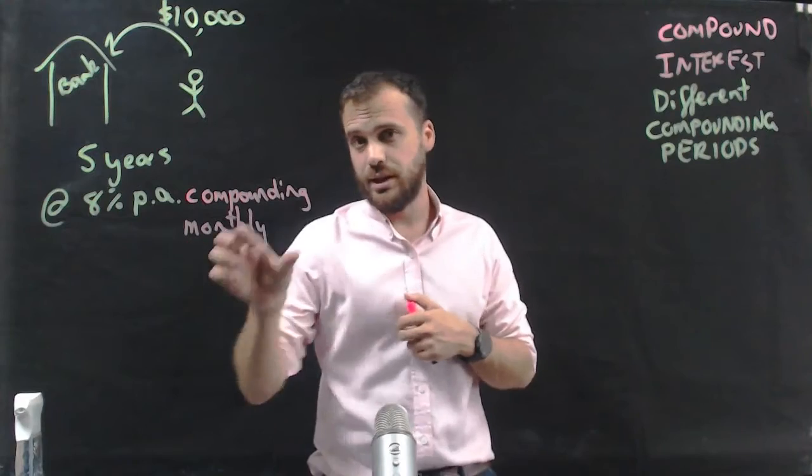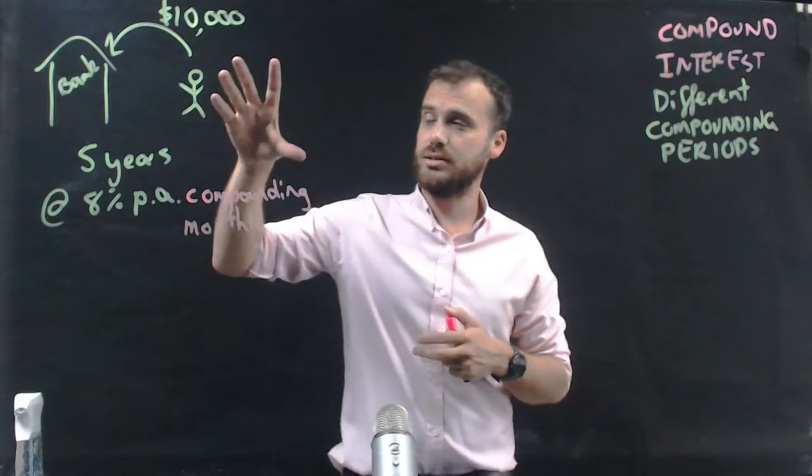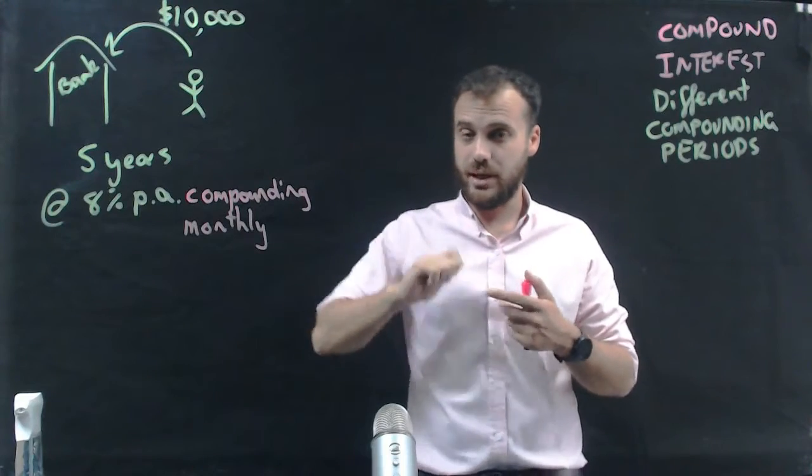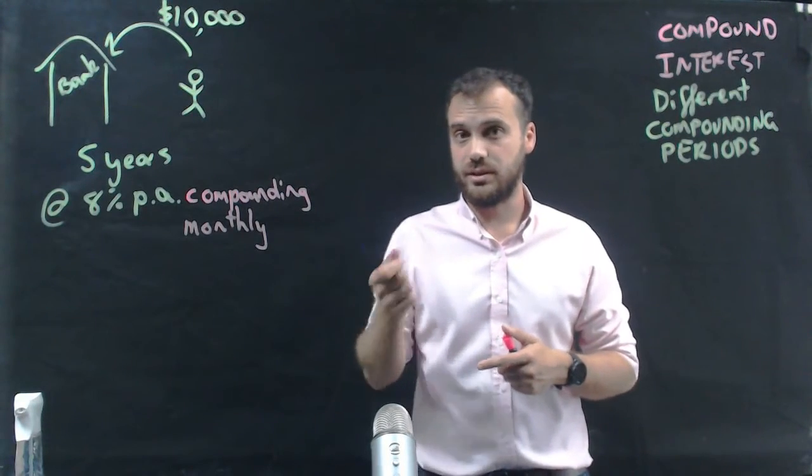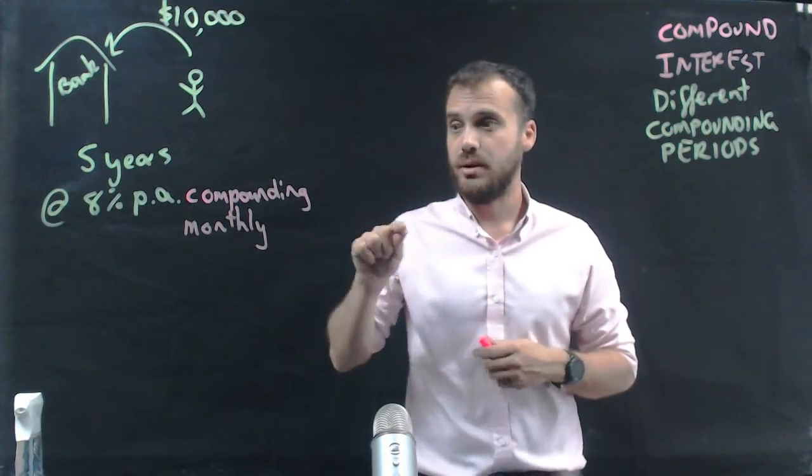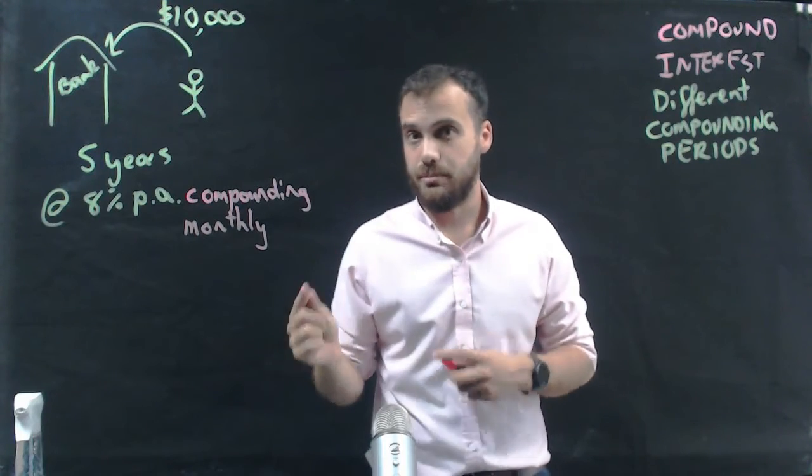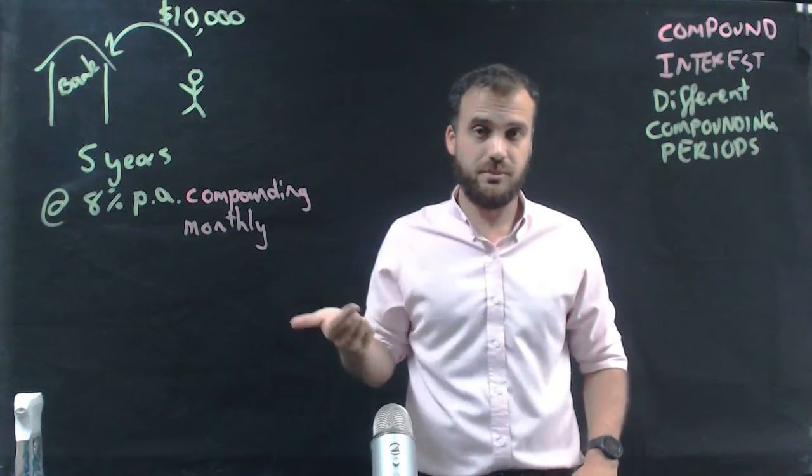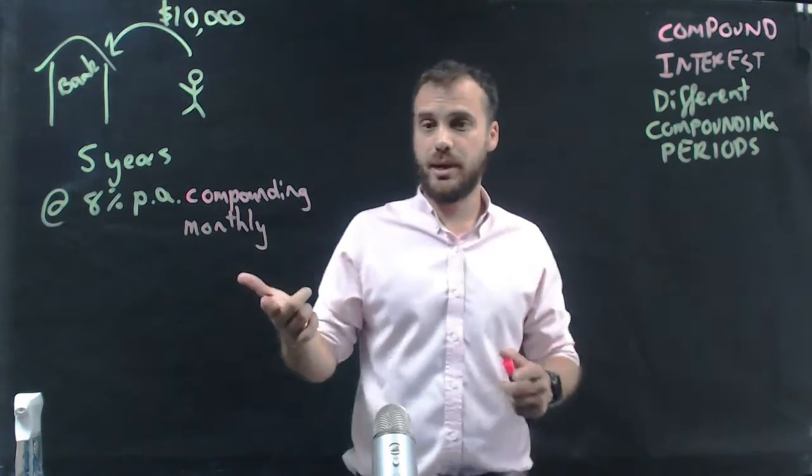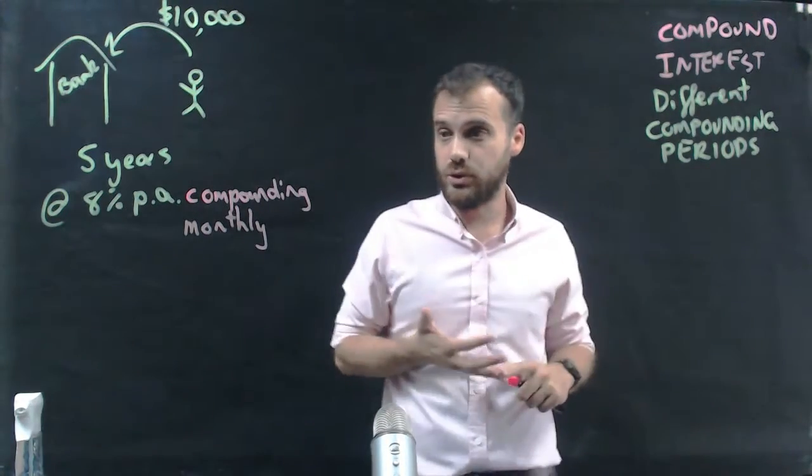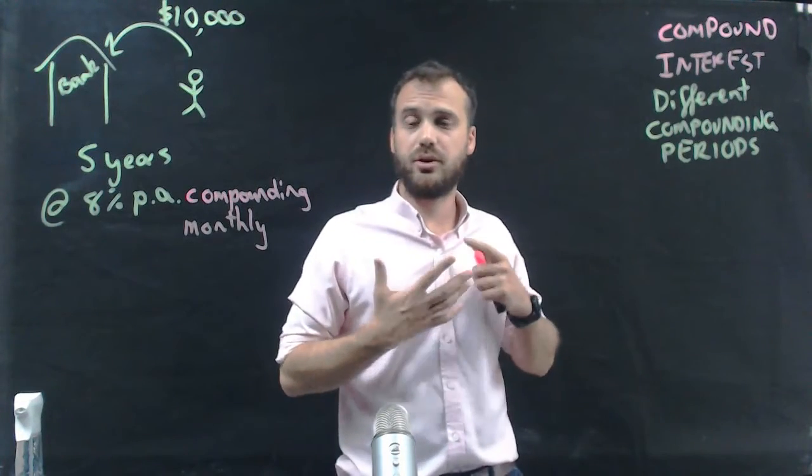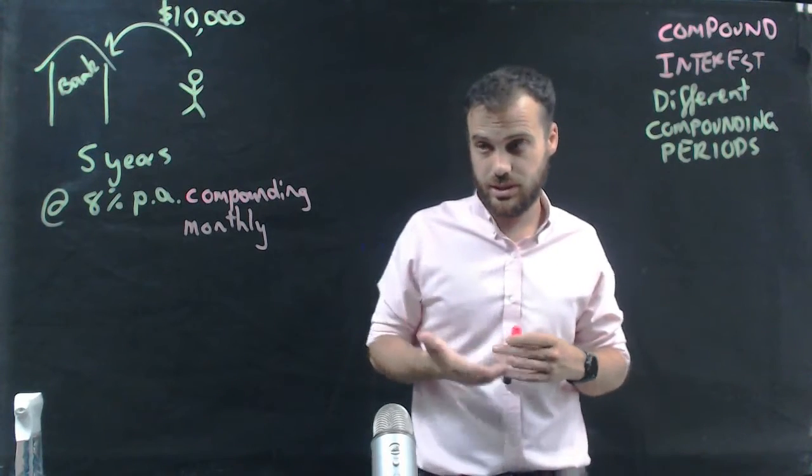Compounding monthly means you put $10,000 in the bank for five years at 8% per annum, but they don't pay you at the end of every year. Instead, they pay a smaller amount of interest every month. At the end of every month, you get a payment into your account. You could compound weekly, fortnightly, monthly, quarterly four times a year, or every six months twice a year.